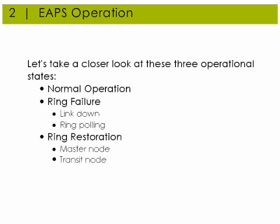In this section we'll cover in detail EAPS operation — specifically these three operational states: normal operation, ring failure, and ring restoration. EAPS has a default and fail-safe mechanism for ring failure notification. We'll look at the differences between link-down alerting and ring polling, and compare the different functions the master node and transit nodes perform during ring restoration.